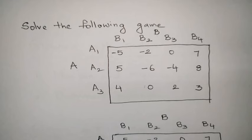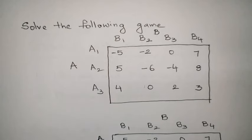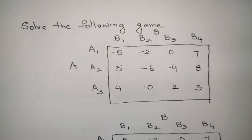Now, without any delay, let us find the solution for the problem — that means we need to solve the game. Solving the game means we need to find two things: first, who is going to win the game, and second, what is the value of the game. In order to get the value of the game, we need to identify the optimal strategies selected by players A and B.